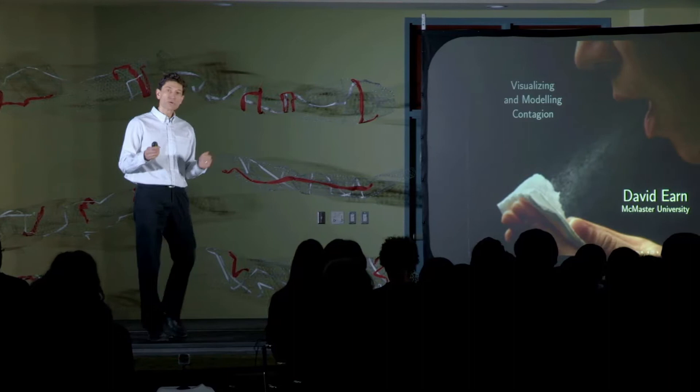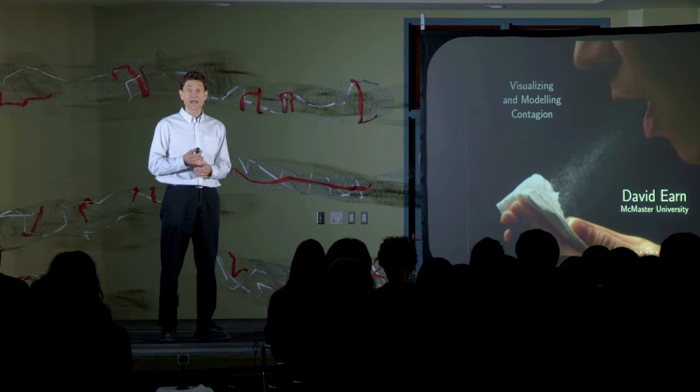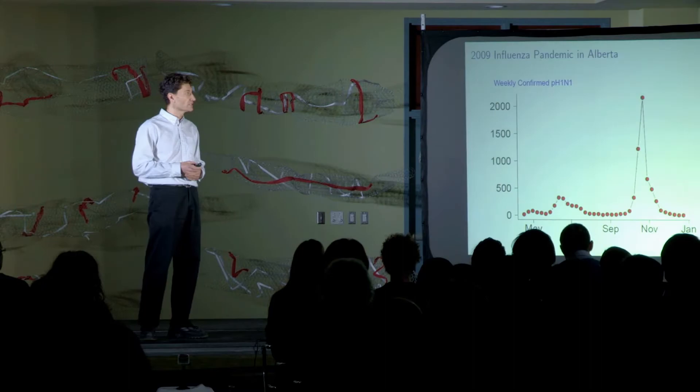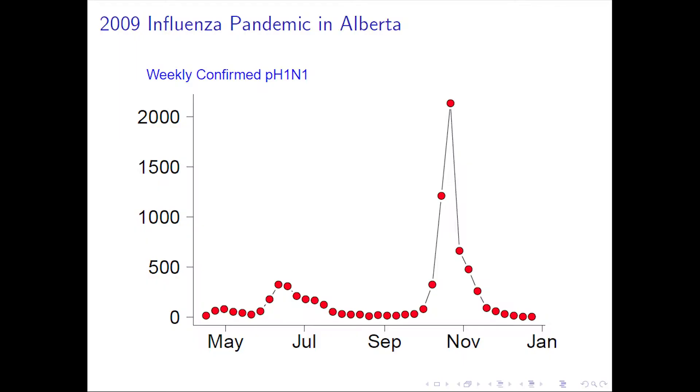In order to do that, we need some solid data on what has actually happened in terms of disease spread — when cases or deaths from disease actually occurred. Let me begin by showing you a couple of examples of work that I've done recently. I'm sure you all remember that we had a pandemic of influenza in 2009.